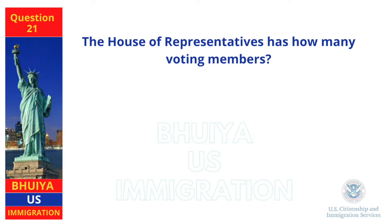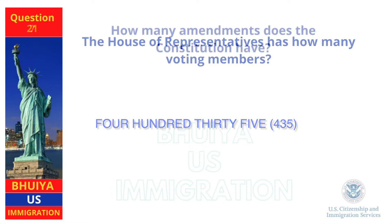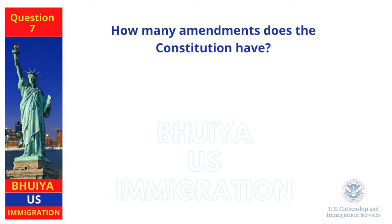The House of Representatives has how many voting members? 435. How many amendments does the Constitution have? 27.